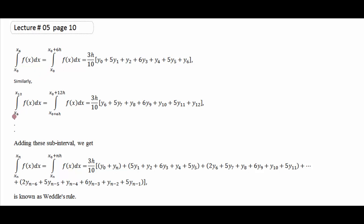اگلے 6 intervals کے لئے x₆ to x₁₂ کے لئے formula بنے گا۔ nth کے لئے formula بنے گا، اور ان کو add up کریں گے تو general Weddle's rule formula مل جائے گا۔